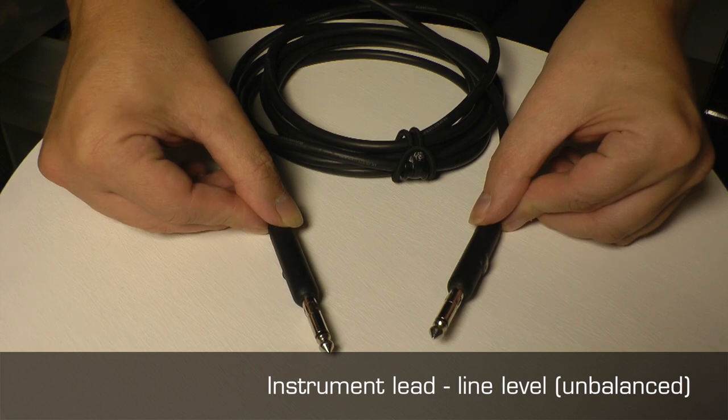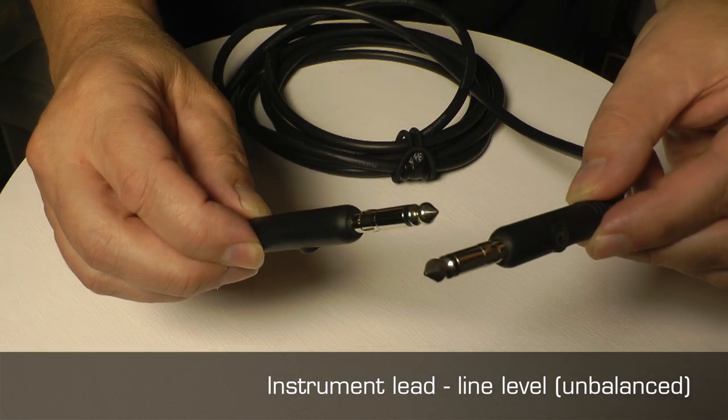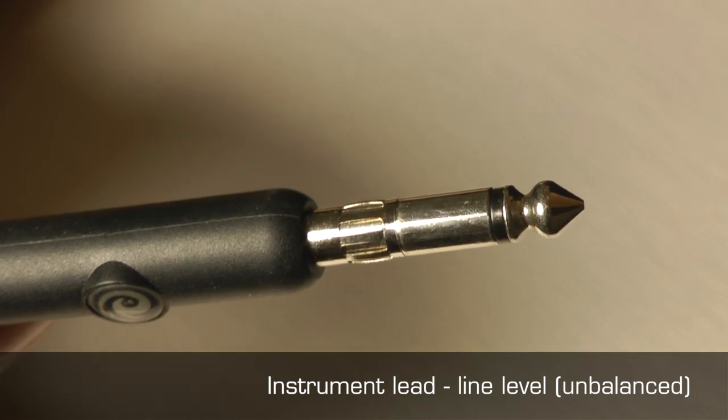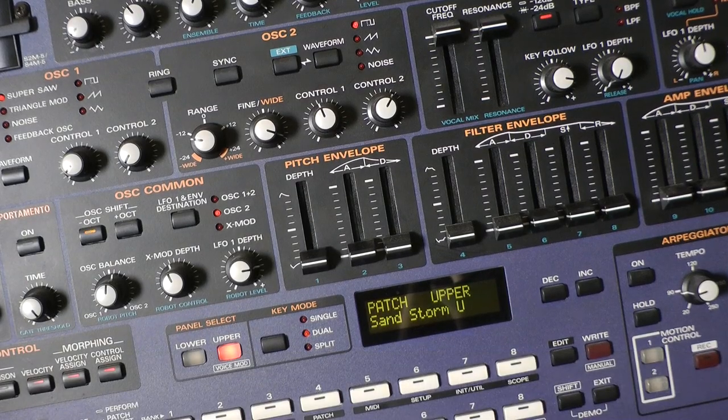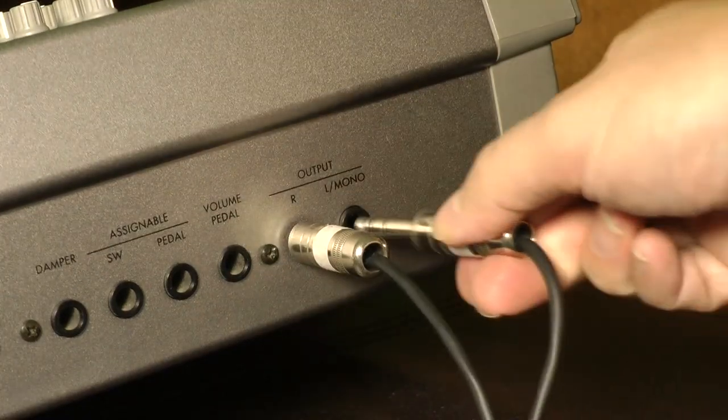This is a jack-to-jack instrument lead, line-level electrical unbalanced. It's male-to-male mono quarter-inch jack, used to connect the output of line-level electronic synthesizers, drum machines and keyboards to audio interfaces and mixers.